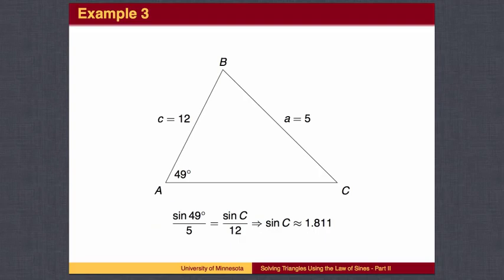Here is a third example. In this case, angle C has a sine value of 1.811. But we know the output of the sine function is always between negative 1 and 1, so there is no such angle that works and we get no solution. This is the case where the side with length 5 is too short to reach the base of the triangle.